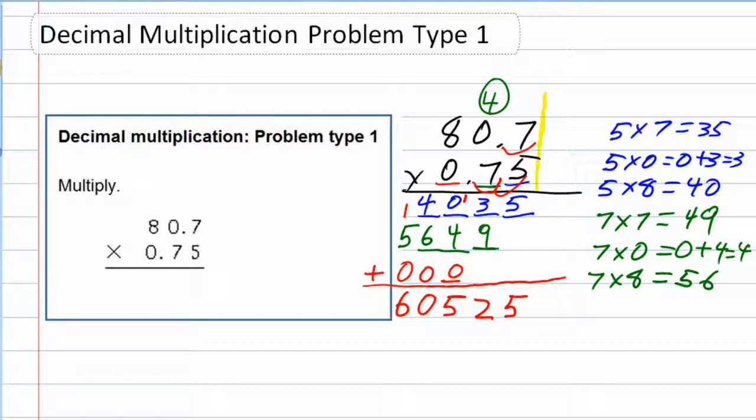So one decimal place in the top, two decimal places in the bottom for a total of 3 decimal places. That means my answer needs to have 3 decimal places.